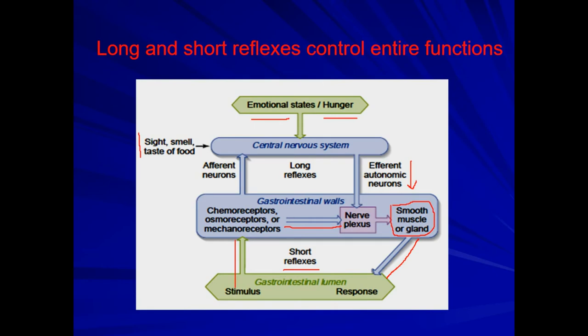Alternatively, stimuli from the GIT lumen that stimulate chemoreceptors, osmoreceptors, or mechanoreceptors can also send impulses to the central nervous system via afferent neurons. The messages from the nervous system are then sent down via efferent nerves carried by the autonomic nervous system, which collaborates with the built-in myenteric plexus or the submucosal plexus to elicit the desired response.